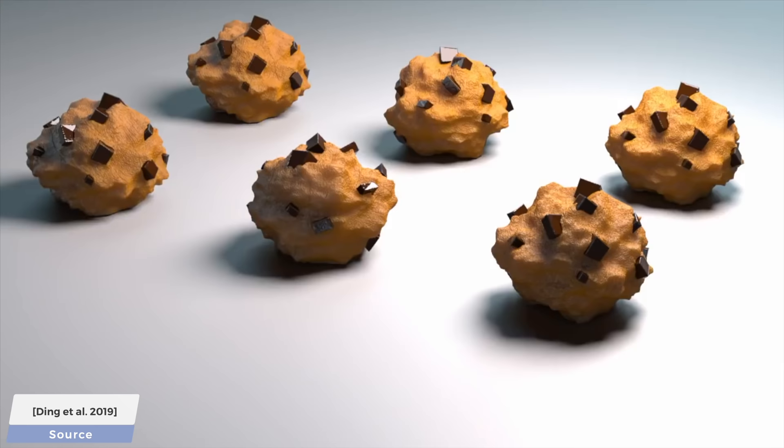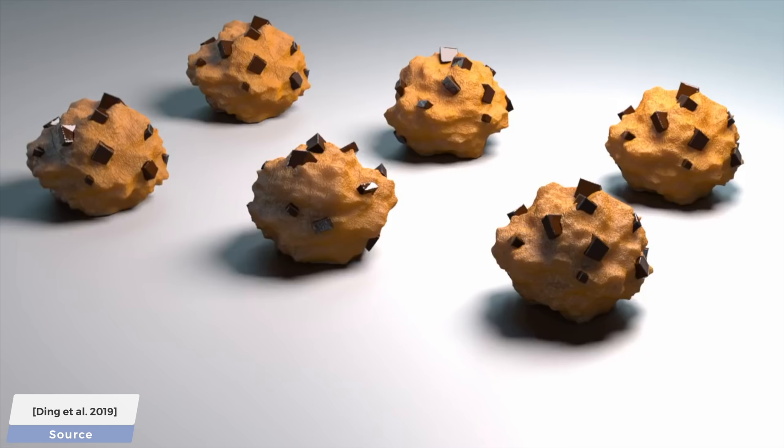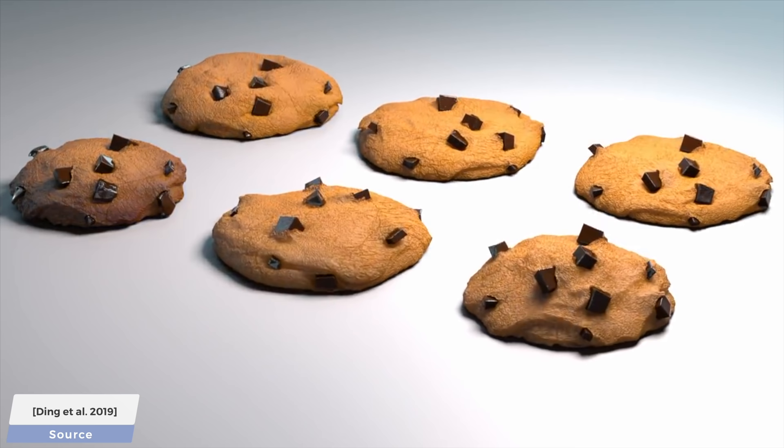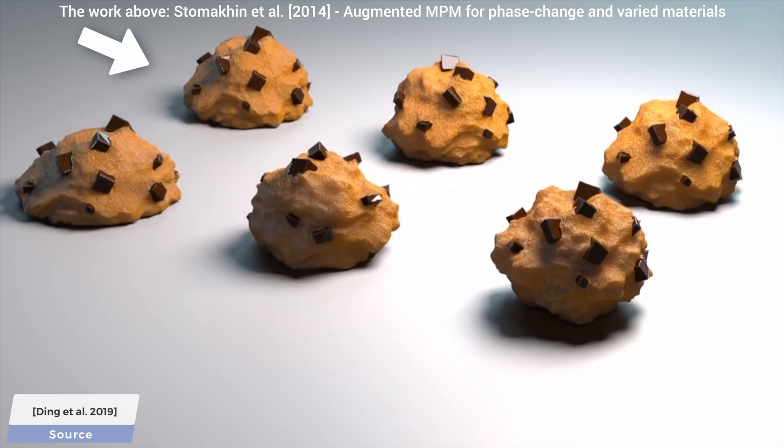Let's have a look at some more results. And we have to stop right here, because I'd like to tell you that the information density on this deceivingly simple scene is just stunning. In the x-axis from the left to right, we have a decreasing temperature in the oven, left being the hottest, and the chocolate chip cookies above are simulated with an earlier work from 2014.